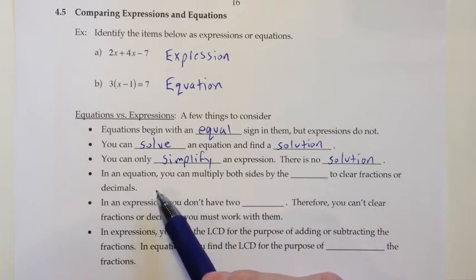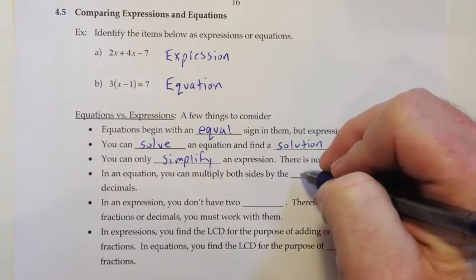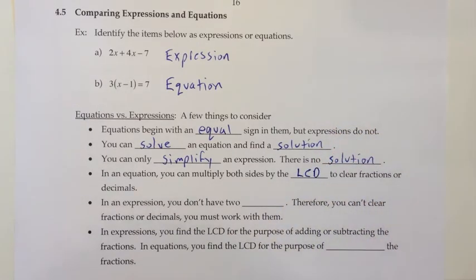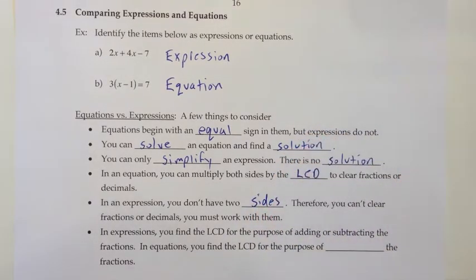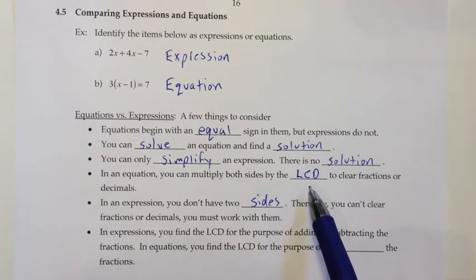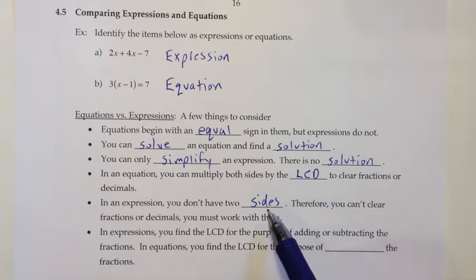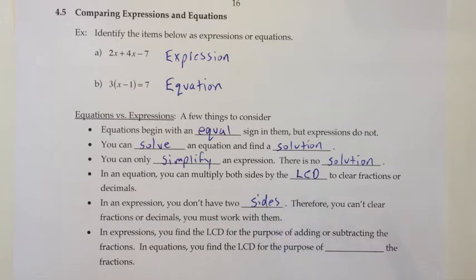If you have an equation, you can multiply both sides by the least common denominator — the LCD — to clear fractions or decimals. That means if you start out with fractions, you have the option to get rid of them if it's an equation. However, if it's an expression, you don't have two sides and therefore you can't clear fractions or decimals — you have to work with them. People get used to clearing fractions by multiplying both sides by the LCD, and then when given an expression, they just multiply everything by the LCD. But without two sides, there's no balance, and you're changing the value, which messes up your answer.